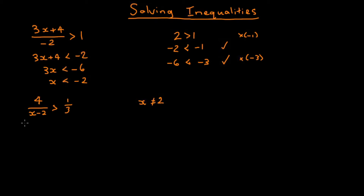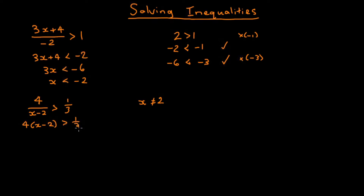We'd like to use the same trick as in the first question, which is to multiply both sides of the inequality by x minus 2. But here we don't know whether x minus 2 is positive or negative, so we don't know whether or not to flip the inequality sign. One way around that is to instead multiply both sides by (x minus 2) all squared. And we know that's a positive number, so our sign doesn't have to change. If we do that, on the left we get 4 times (x minus 2) greater than one-third times (x minus 2) squared.